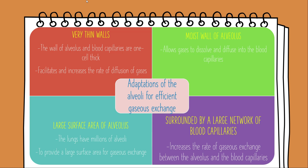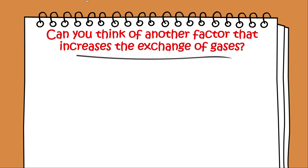Secondly, the moist wall of alveolus allows respiratory gases to dissolve and diffuse into the blood capillaries. The lungs contain millions of alveolus which provide a large surface area for the exchange of gases. And lastly, the alveolus is covered by a compact network of capillaries which increases the rate of gaseous exchange between the alveolus and the blood capillaries.